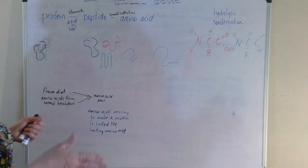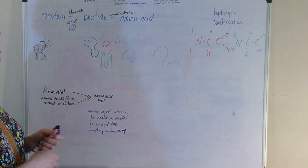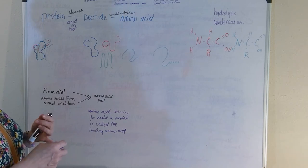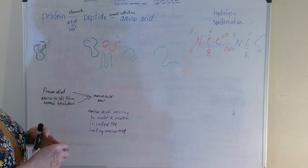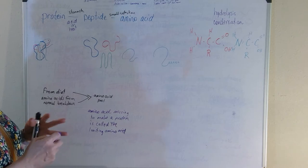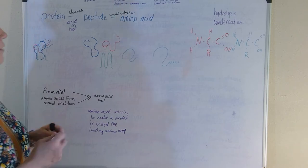But nine of those amino acids are essential, which means that you have to eat those foods or eat those amino acids in your diet in order for your body to obtain them. Your body cannot make those nutrients itself.